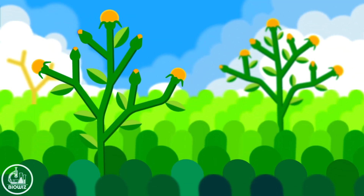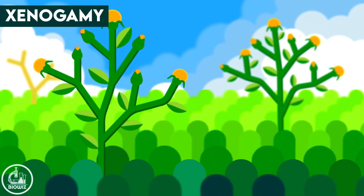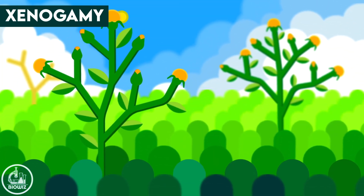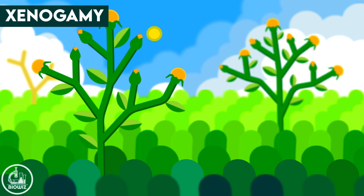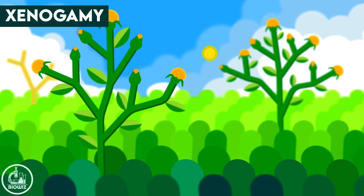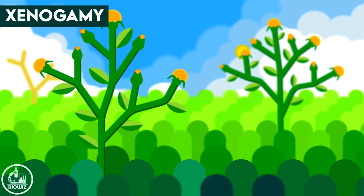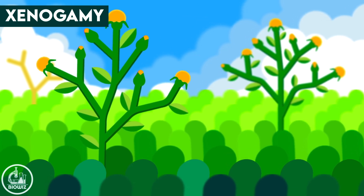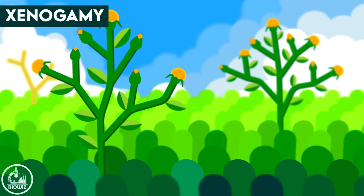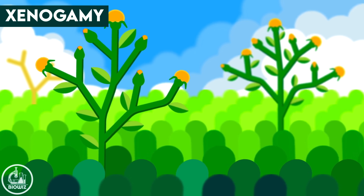The third and last type of pollination is xenogamy or allogamy. In this type of pollination, the pollen are carried from the flower of one plant to the flower of another plant of the same species.